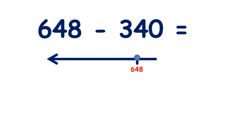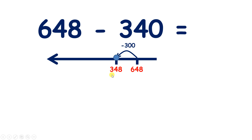We have 648 minus 340, so we need to subtract 300s and 410s. If we have 600s and we subtract 300s, that will give us 300s, and we still have the 48 that we started with, so we have 348.